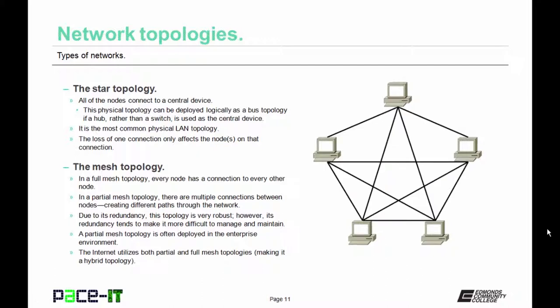Then there's the mesh topology. In a full mesh topology, every node has a connection to every other node. But there are also partial mesh topologies where there are multiple connections between nodes, creating different paths through the networks, but not every node is connected to every other node. Due to its redundancy, the mesh topology is very robust. However, this redundancy also tends to make it more difficult to manage and maintain. Quite often you'll find a partial mesh topology deployed in the enterprise environment. The internet utilizes both partial and full mesh topologies, making it a hybrid topology.